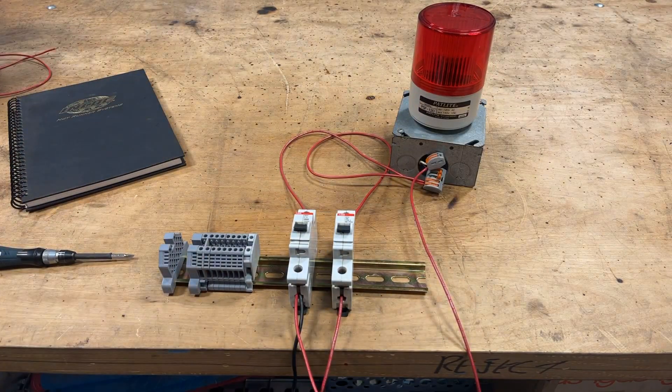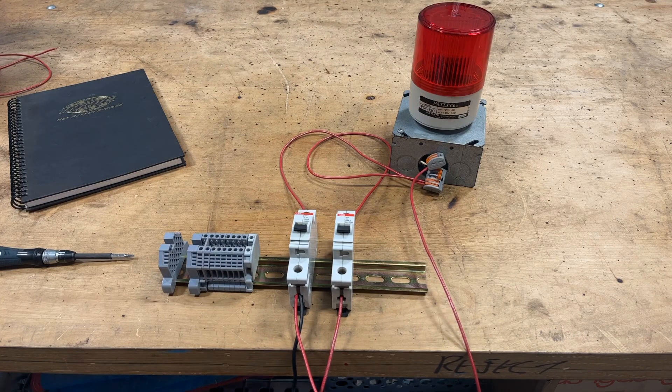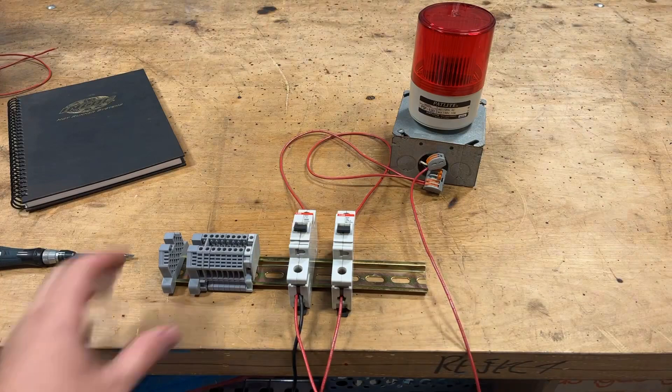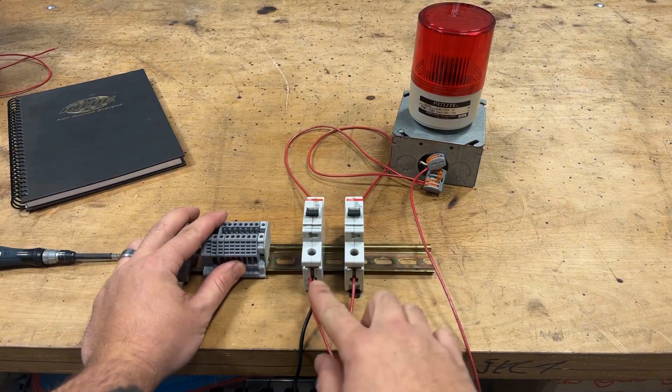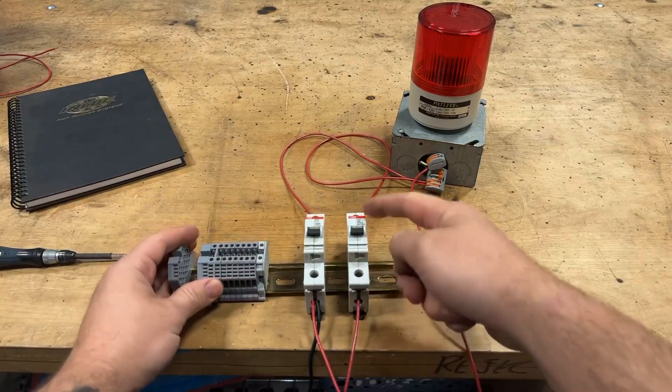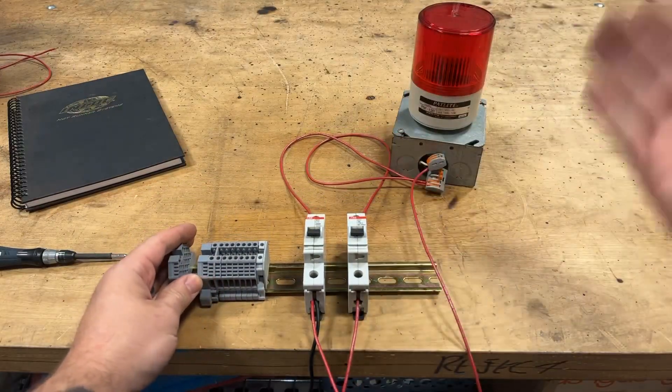Now, what we've effectively done here, after we re-energize the circuit, this is now a parallel circuit. I have the power coming in to the bottom of both of my switches and I have the power coming out of the top of both of my switches.